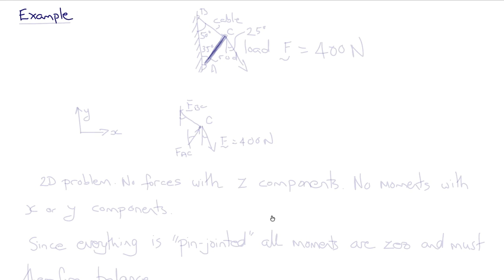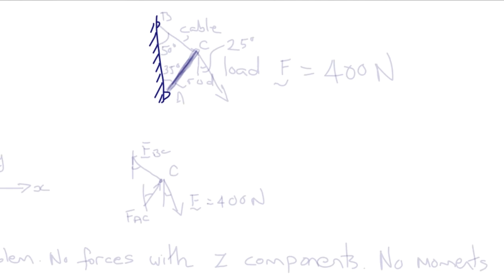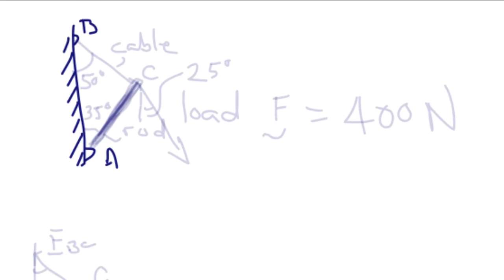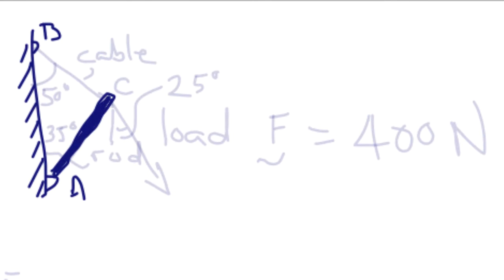So let's do a simple example that we can complete in class. So here's a wall with a pin-jointed structure. We have, at A and B, connections of the structure to the wall.